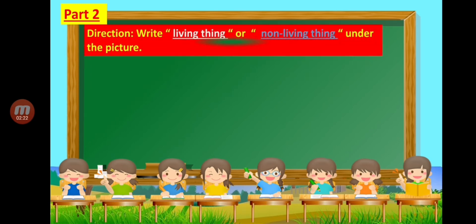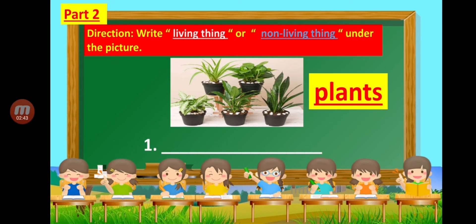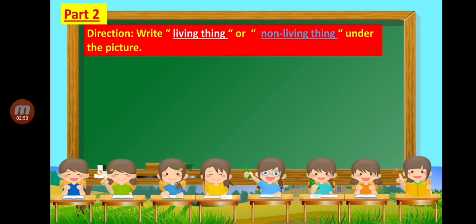For Part 2, you are going to write 'living thing' or 'non-living thing' under the picture. Number 1: It's a plant. Is a plant a living thing or a non-living thing? What will be the answer?